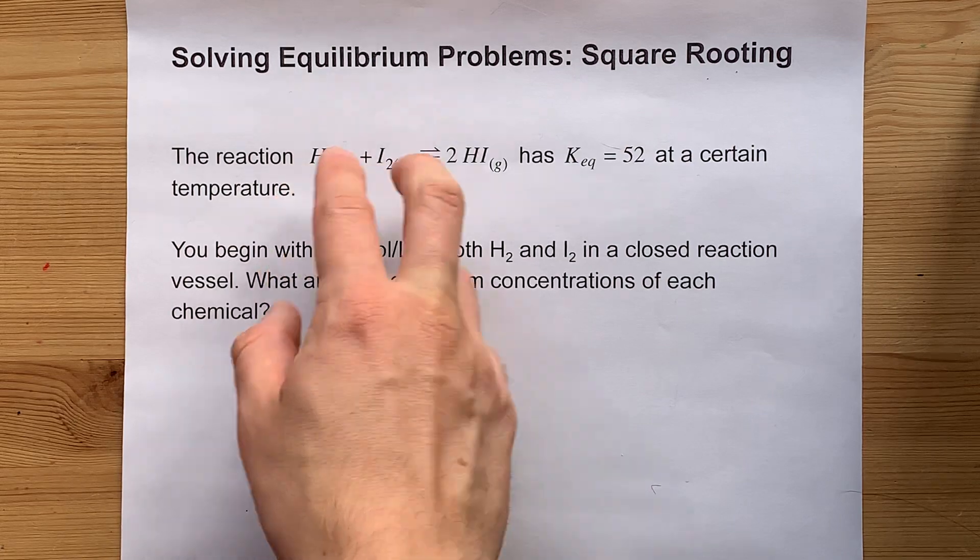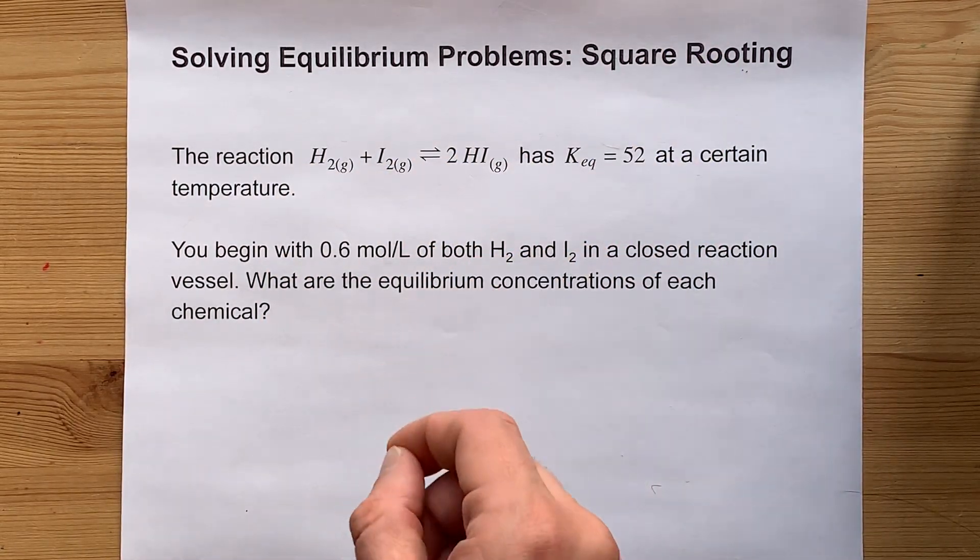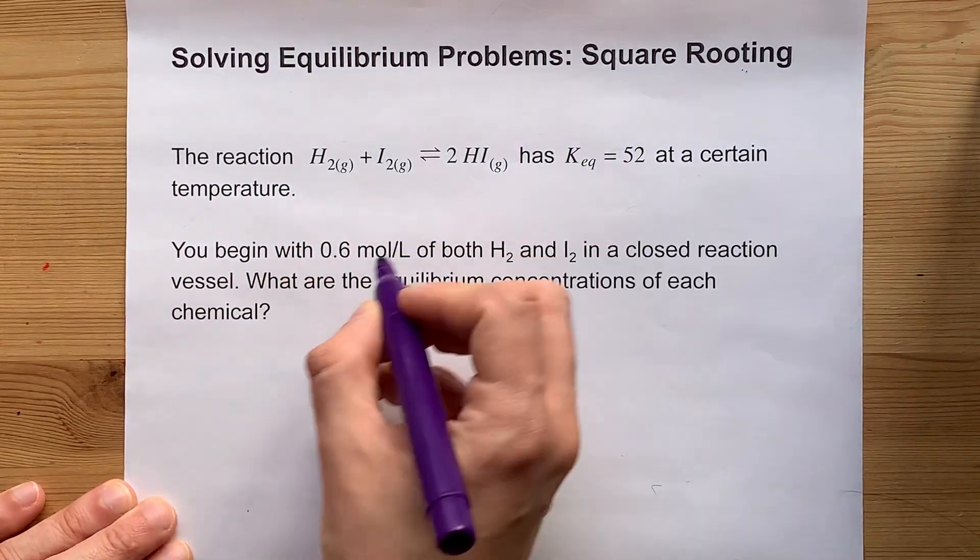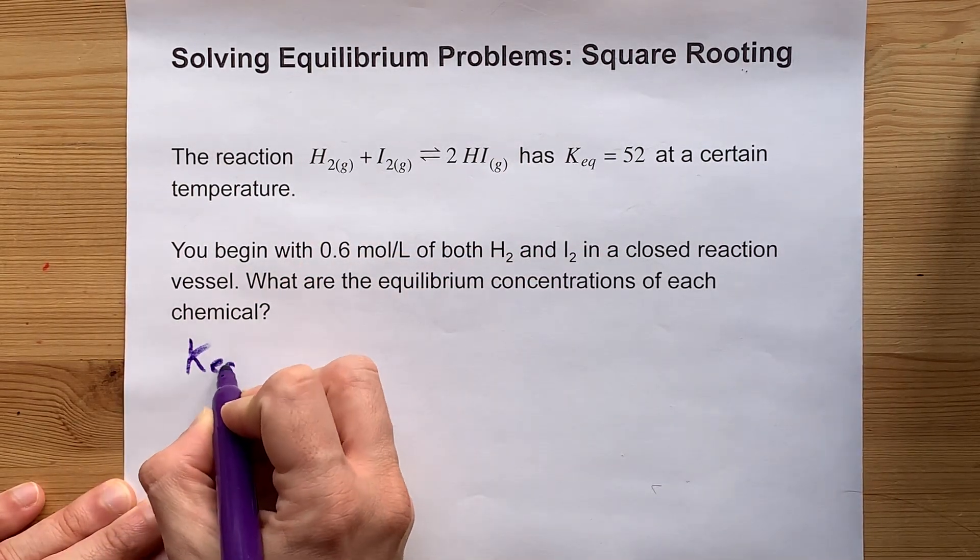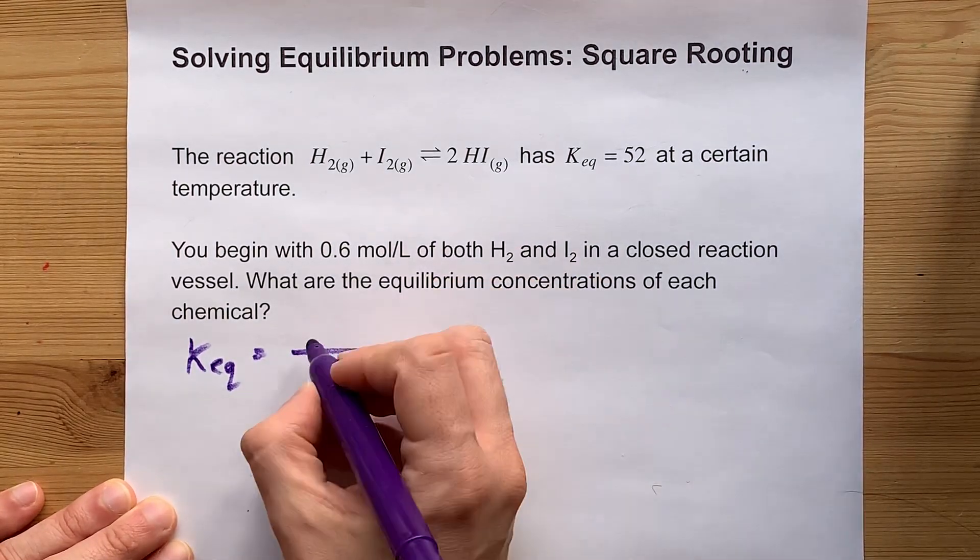The reason is that you can square root both sides and avoid having to use a quadratic equation. Let me show you why. First, we'll start by creating the equilibrium expression KEQ, which itself is products over reactants.